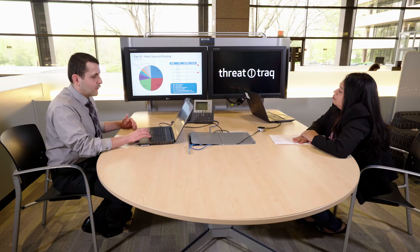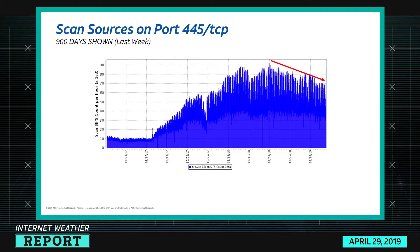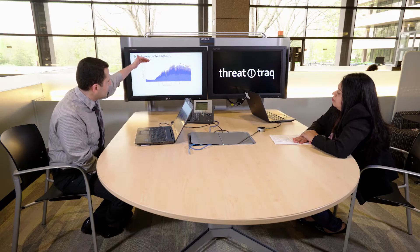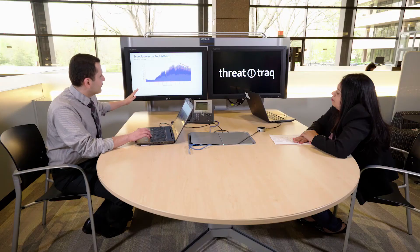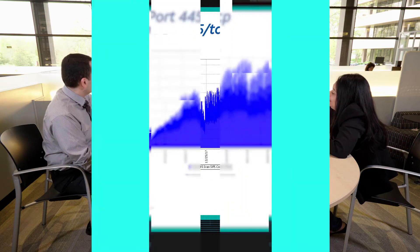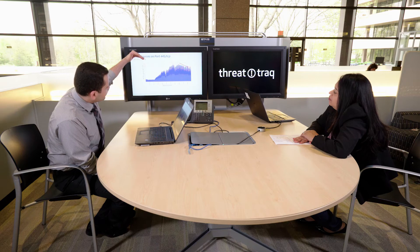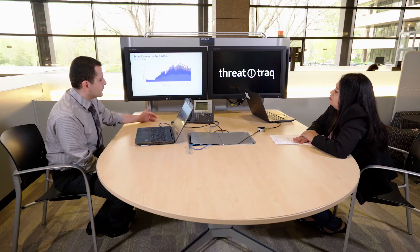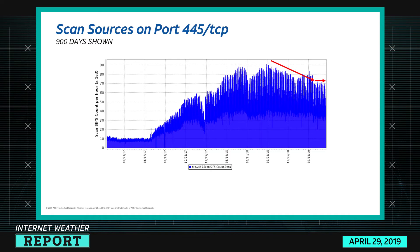Last week we looked at the last 900 days of activity for port 445, which is almost three years. You could see how the activity had ramped up — mostly related to WannaCry — and then how it started to slope down. I wanted to see this week if it's still going down. Seven days doesn't make a big difference on a 900-day chart, but you can see the activity has kind of flattened out — it's not continuing downward. That's normal; it may go back up or continue down, as we've seen these patterns over nearly three years.